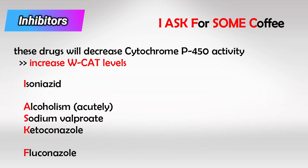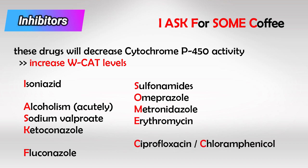The inhibitors are: Isoniazid (for TB), Acute alcoholism, Sodium valproate (an anti-epileptic), Ketoconazole and Fluconazole (antifungals), Sulfonamides, Omeprazole (a PPI), Metronidazole, Erythromycin, Ciprofloxacin, and Chloramphenicol (which we don't use much anymore).